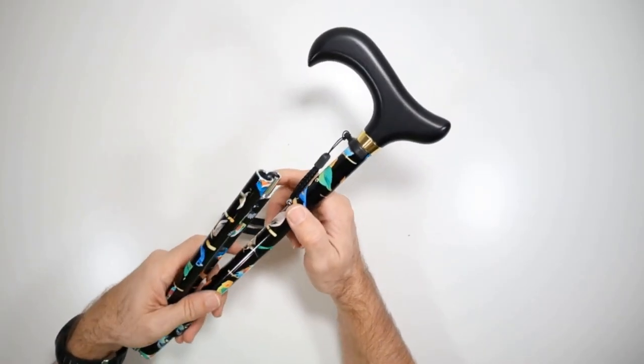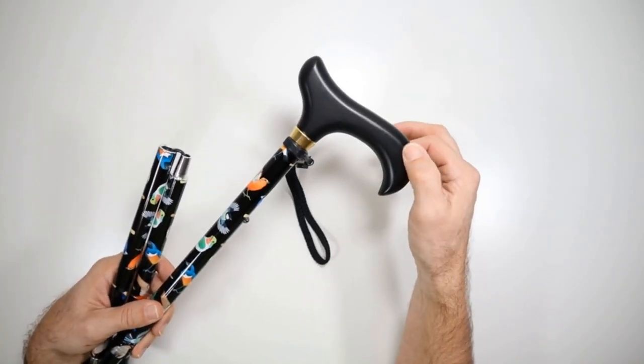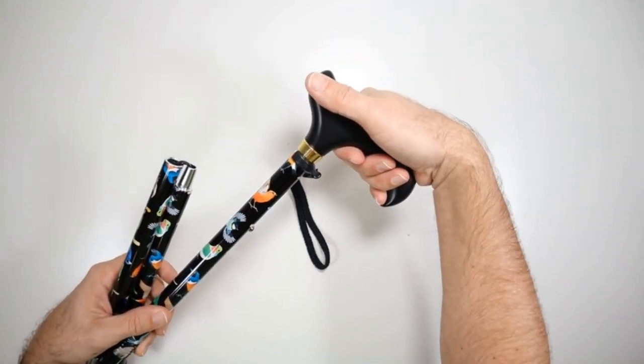So taking a closer look at the EasyFold cane, it does have the Derby style handle. This handle is designed to fit naturally into the curve of your hand.